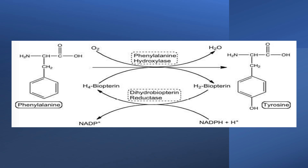Phenylalanine inside your body has only two functions. The first function, as any amino acid, is to enter in the structure of protein synthesis. The second function is to synthesize tyrosine amino acid. Phenylalanine is an essential amino acid because your body cannot synthesize the benzene ring, while tyrosine is a non-essential amino acid as your body can synthesize it from phenylalanine.